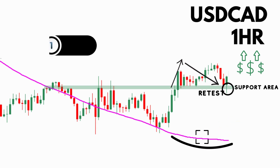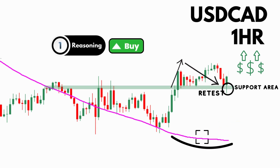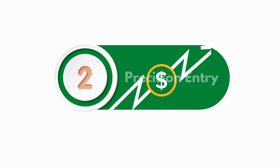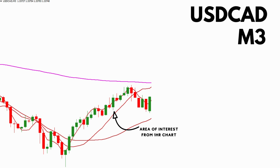We also have the MTFX influence line beginning to roll over from a downward slope, which also suggests we may soon begin to see some bullish momentum. So now we have solid reasoning that prices may be rising and we want to focus on buying opportunities. The next step drills down to a lower time frame — here we are on the three-minute chart.